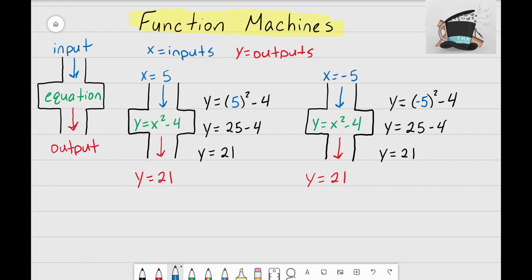a great example of how you can use the same function machine that has the same equation inside, and you can get the same output by using two different inputs. In this case, since our function machine had x squared,